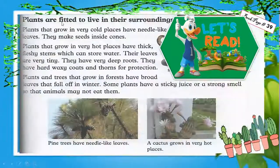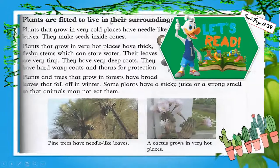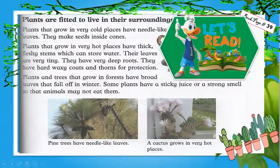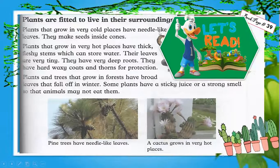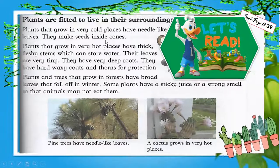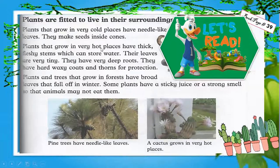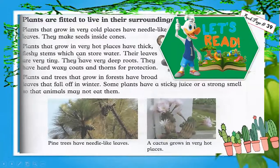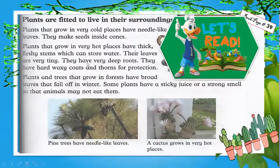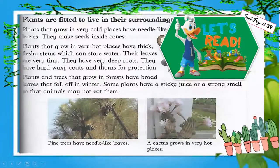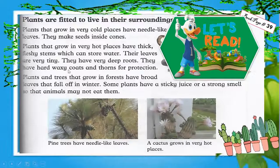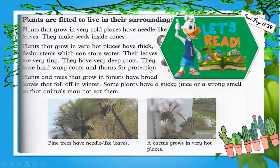Plants are fitted to live in their surroundings too. Plants that grow in very cold places have needle-like leaves and make seeds inside cones. Plants that grow in very hot places have thick fleshy stems which can store water; their leaves are very tiny. They have very deep roots, hard waxy coats, and thorns for protection.